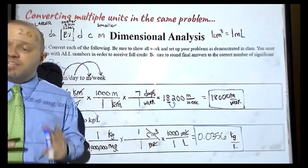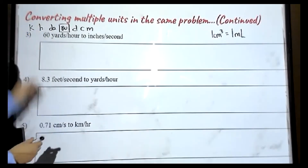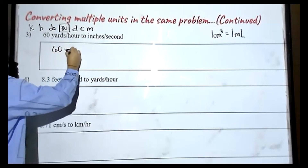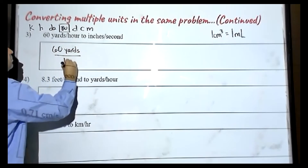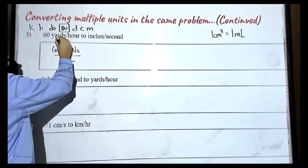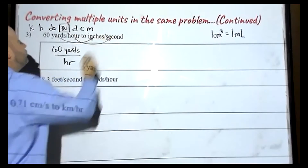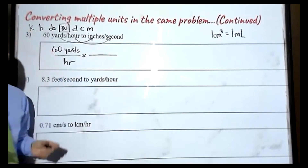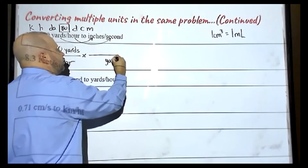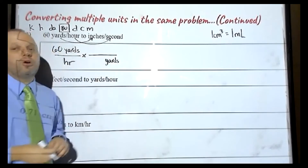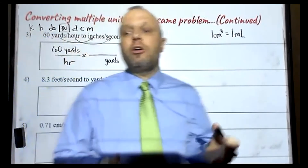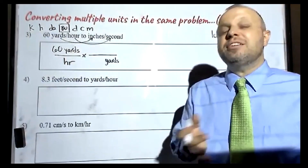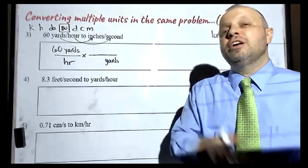We're going to try three more problems together. In problem number three, we have 60 yards per hour, and we're trying to go from yards to inches and from hours to seconds. First thing — we're going to convert yards. Currently yards is on the top, so I'm going to put yards on the bottom. Some of us know how many inches are in a yard, others don't — but we should all remember that there are three feet in a yard, and there are 12 inches in a foot, so 36 inches are in one yard.